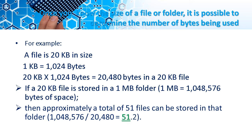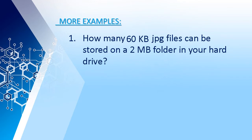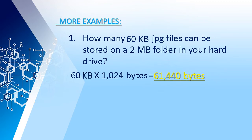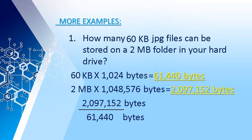1,048,576 divided by 20,480 is equal to 51.2. How many 60 kilobyte JPG files can be stored on a 2 megabyte folder in your hard drive? 60 kilobytes times 1,024 bytes is equal to 61,440 bytes. 2 megabytes times 1,048,576 bytes is equal to 2,097,152 bytes. Now divide the two answers: 2,097,152 bytes divided by 61,440 bytes is equal to 34 JPG files.